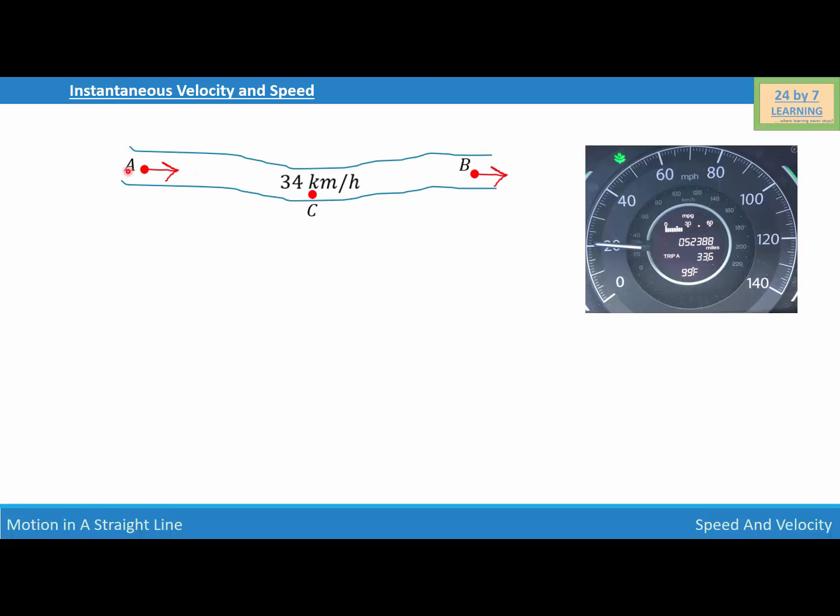Basically, I was driving my vehicle on this road and I was going from point A to point B, but when I was at point C, I checked the autometer reading and I realized that I was driving at 34 kilometers per hour.